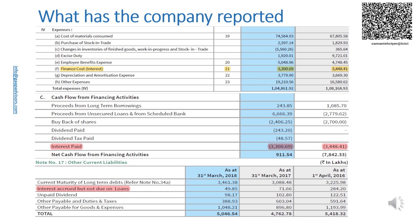The company has reported interest paid in cash flows from financing activities equal to the finance costs reported in the statement of profit and loss. This means that the company either has no accrued interest or has equal amounts of accrued interest at the end of the current year, previous year, and opening of the previous year. However, the company has disclosed in note 17 the carrying amount of interest accrued but not due on loans, and that amount is decreasing.